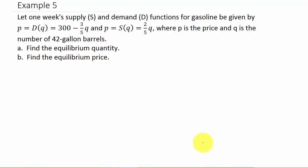We can write the demand function as P = 300 - (3/5)Q and the supply function as P = (2/5)Q.